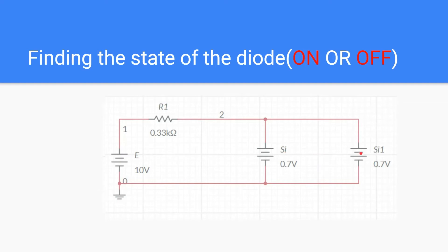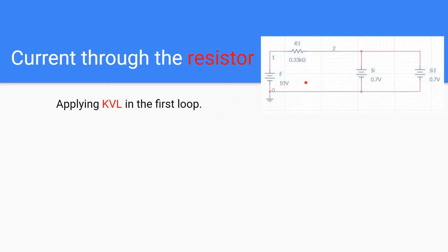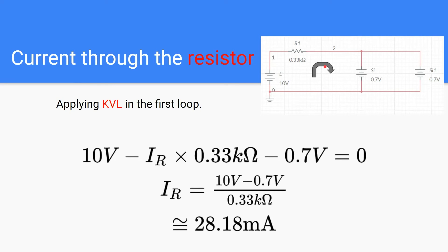The diodes are replaced with a 0.7 volt drop. We can see that the voltage drop across the diode is 0.7 volt. Now we will find the current through the resistor by applying KVL in the first loop. The equation is: 10 volt minus I_R times 0.33 kilo-ohm minus 0.7 volt equals zero. Solving this gives I_R equal to (10 - 0.7) / 0.33 kilo-ohm, which is approximately 28.18 milliamperes.